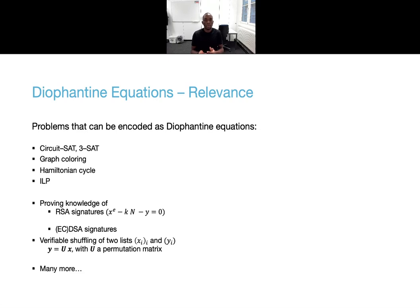More specific to crypto and among other problems, the problems of proving knowledge of an RSA signature or of an ECDSA signature can also be encoded as Diophantine equations. Even the problem of proving that two lists of committed values are permutations of one another can easily be represented by such an equation. And this problem has applications to voting schemes and mixed nets, for example.